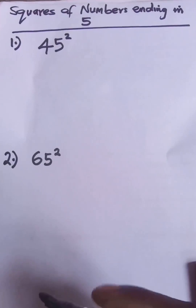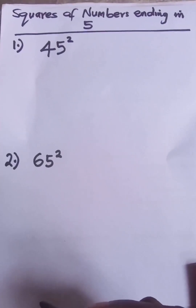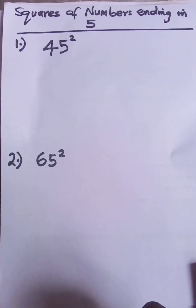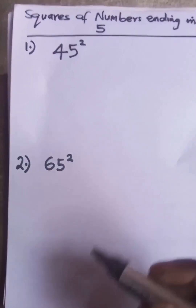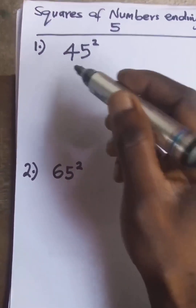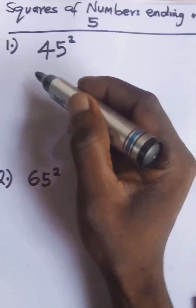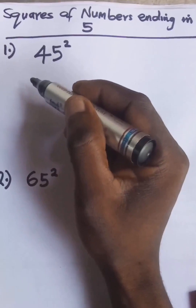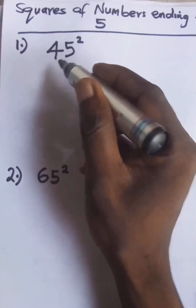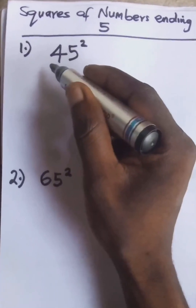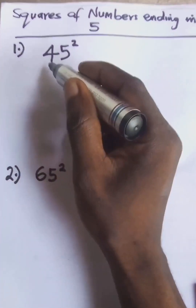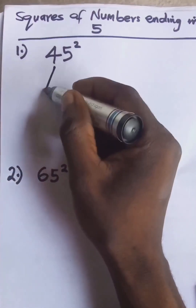We have 45 squared as example one, and 65 squared as number two. The first thing you want to do is look at the tens digit — for 45, the tens digit is 4. You bring down that 4.